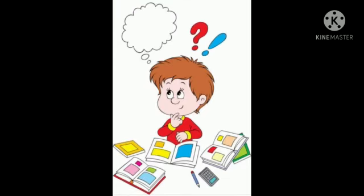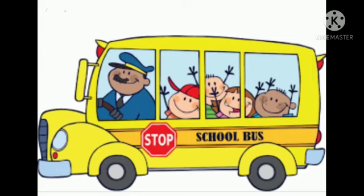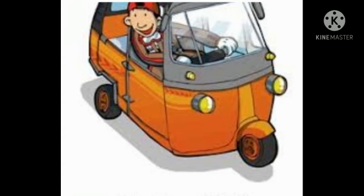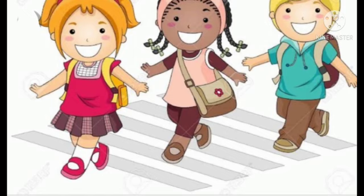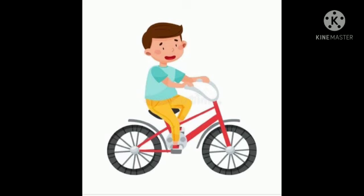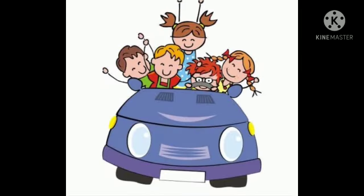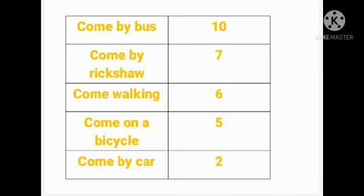Next day in the class, Nandu started asking each boy and girl how they come to school. He took down their answers and made a table listing: students who come by bus, by rickshaw, walking, on a bicycle, and by car.